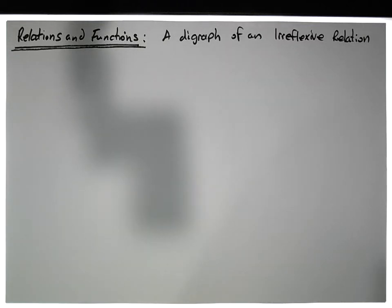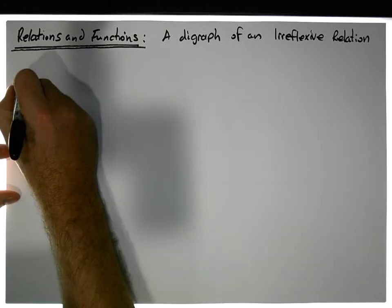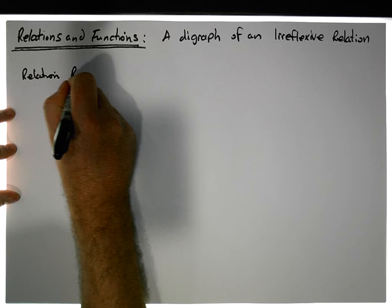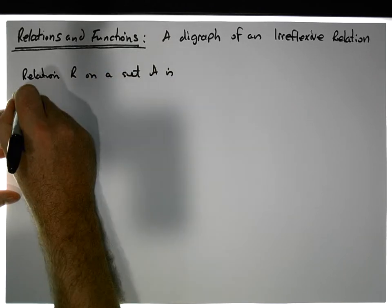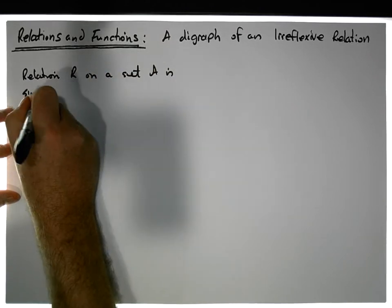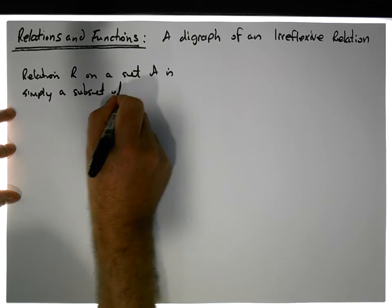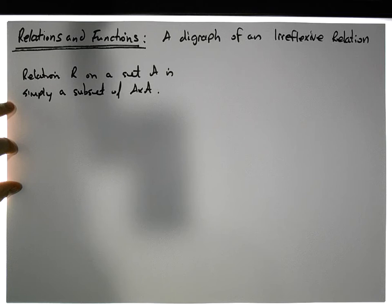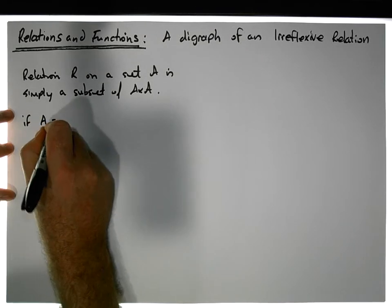Let's define once again what a relation is. A relation on a set A is simply a subset of A cross A — that is, a subset of the cross product of A with itself.